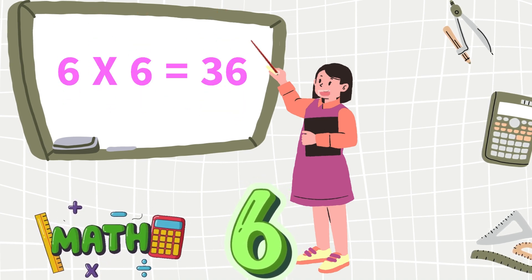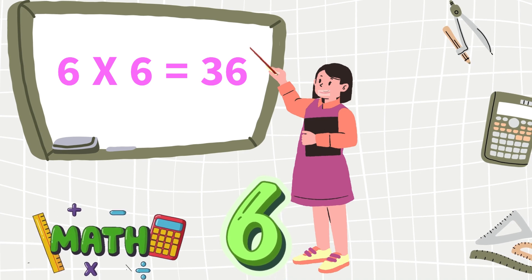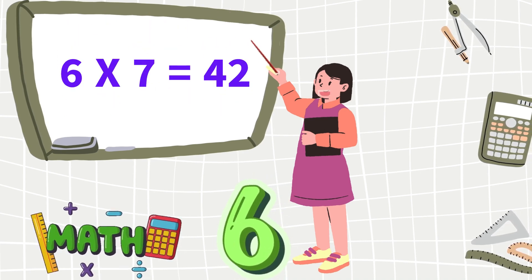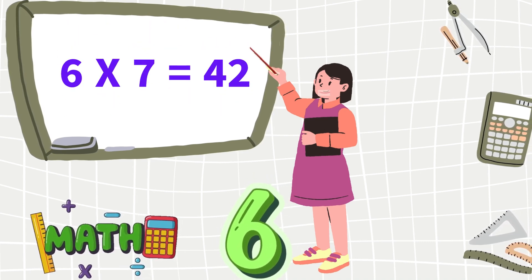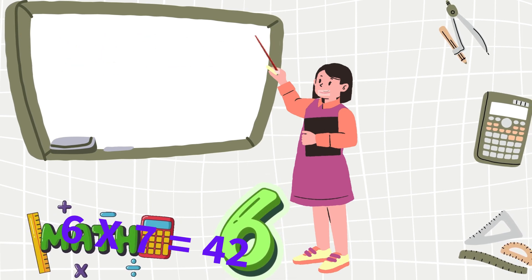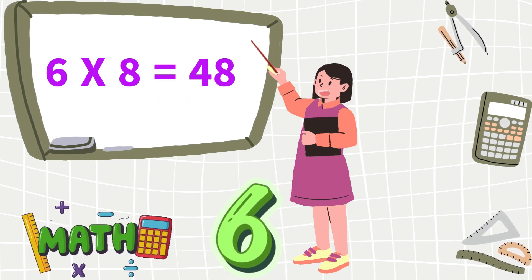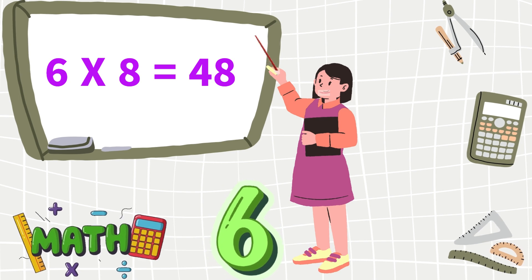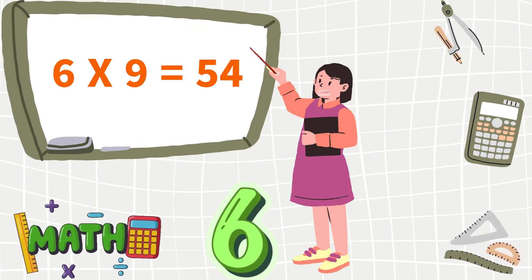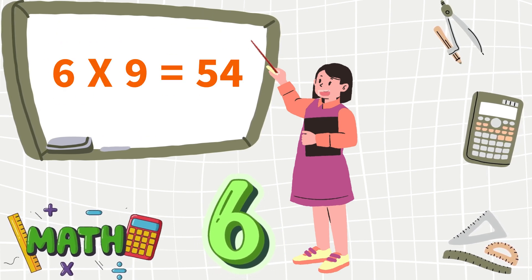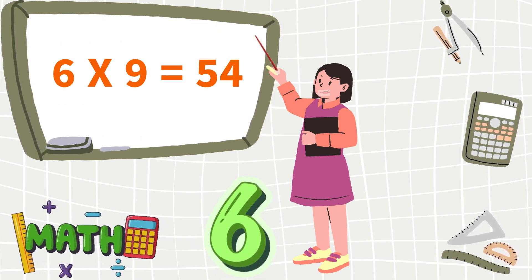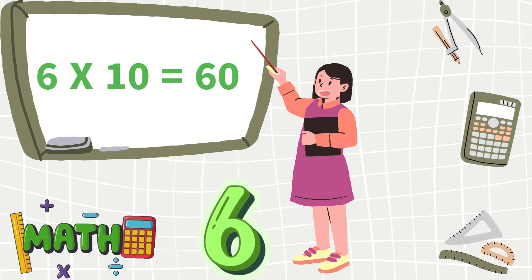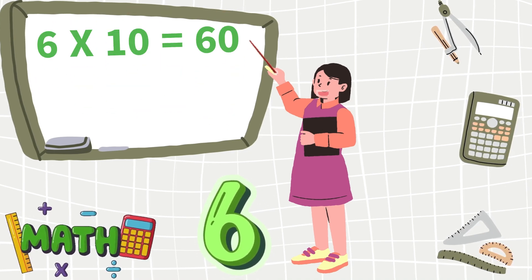6 sixes are 36, 6 sevens are 42, 6 eights are 48, 6 nines are 54, 6 tens are 60.